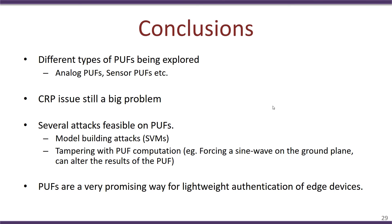In a model building attack, a passive listener observes the challenges and responses exchanged between a server and a device over a period of time, and uses machine learning or model building techniques to build a model of that PUF. After observing a sufficient number of authentications, the attacker can use the built model to respond to future challenges. This means authentication breaks down because the attacker, without owning the correct PUF, is able to provide correct responses to challenges.